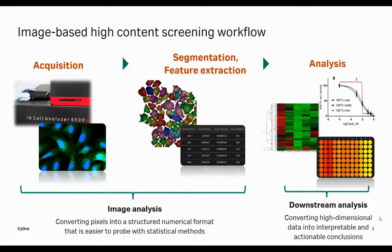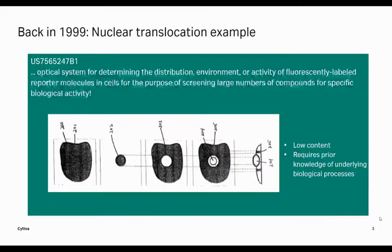In image analysis, we're converting the information in the pixels into a more structured format that's more friendly to applying statistical analyses. The job of the downstream analysis is then to take all that very high-dimensional data, reduce it down to something that we can interpret and understand to draw a conclusion and move on to the next step in our research project.